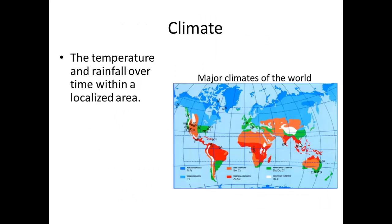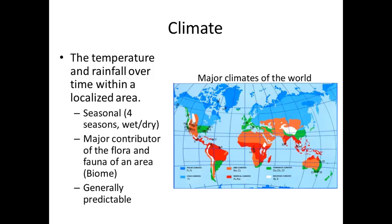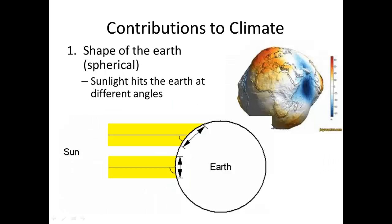Climate, which is one of the major contributors of this biome, includes the temperature and rainfall over time within a localized area. This is how it's different than weather. Weather changes from day to day, but climate is looking at these general patterns across years, months, specific seasons. And it's generally predictable. Some areas may have four seasons. Some areas may have just a wet and a dry season. This is what contributes to the flora and fauna of the area and is generally predictable. This figure you have here is the major climates of the world. At the very northern part, you have very polar arctic conditions, and then you have subarctic, desert, rainforests and so forth.